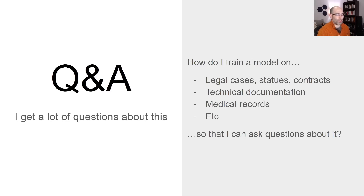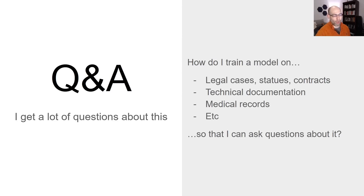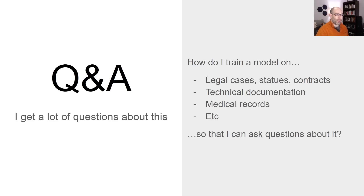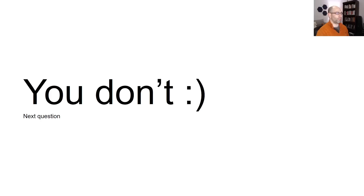I get a lot of questions about QA. How do I train my model on legal cases, statutes, contracts, technical documentation like APIs or KB articles, medical records, and so on? People want to be able to ask questions against their corpus. They think that fine-tuning a model is the way to do it — that all the knowledge will just be compressed into the model and you'll get good answers. You don't. That's not how it works.